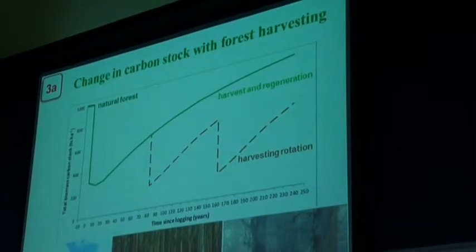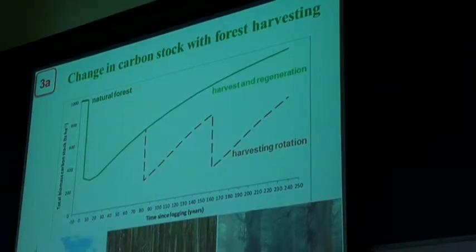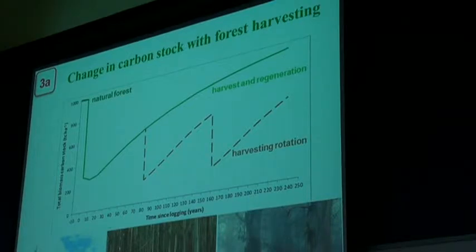We need to take into account the longevity of wood products. With a rotation of 80 years, there's a massive decrease in carbon stock from the natural forest. After harvesting, the forest will regrow. If our rotation length is every 80 years, it will decrease again every 80 years. It will never get back to the original natural forest carbon stock if continually harvested.